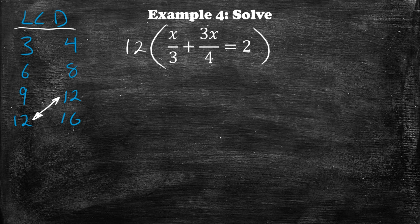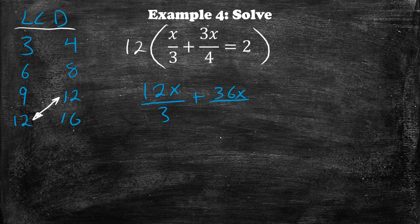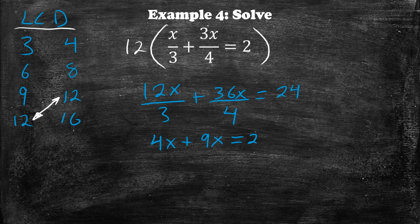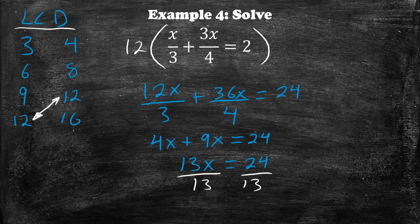We multiply the entire equation by 12, applying it to every variable and number. 12 times x over 3 is 12x over 3, and 12 times 3x over 4 is 36x over 4, equal to 24. Simplifying: 3 goes into 12 four times giving 4x, and 4 goes into 36 nine times giving 9x, equal to 24. Combining like terms on the left gives 13x equal to 24. Dividing both sides by 13, x is equal to 24 over 13. That is our final answer.